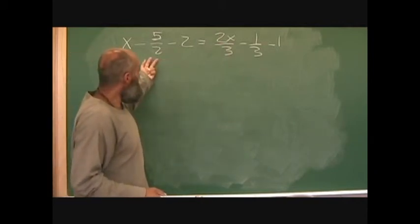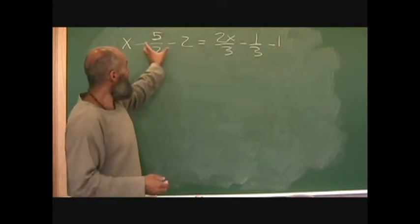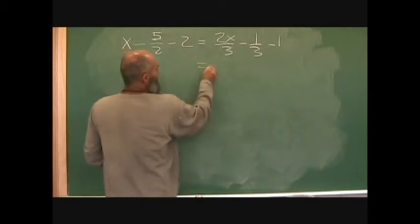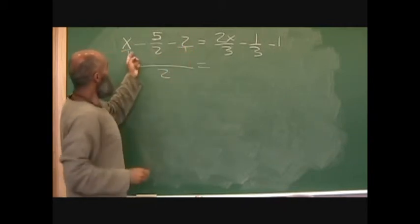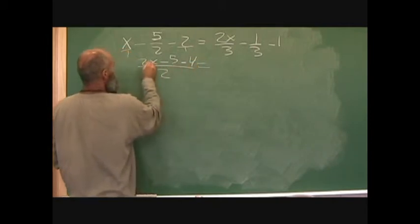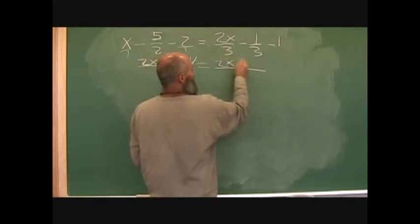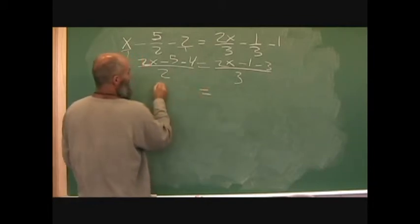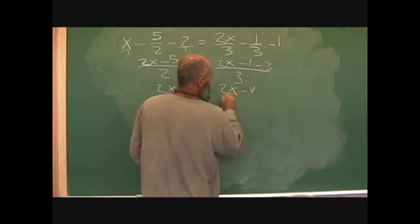We've got the same problem. Instead of multiplying everything by six, we're going to use cross multiplication - combine everything on each side into one term. The common denominator on the left side is two, so x over one becomes two x, giving us two x minus five minus four over two. On the right side the common denominator is three, giving two x minus one minus three over three. Combining like terms: two x minus nine over two equals two x minus four over three.